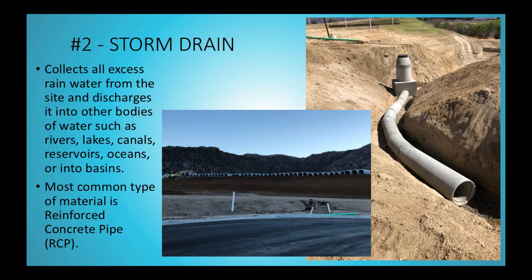Number two is storm drain. The storm drain collects all excess rainwater from the site and discharges it either into other bodies of water such as rivers, lakes, canals, reservoirs, or oceans — or it discharges into basins, which is typically more common around here in Southern California. There are different types of basins, but we'll talk about that in more detail in a later video.